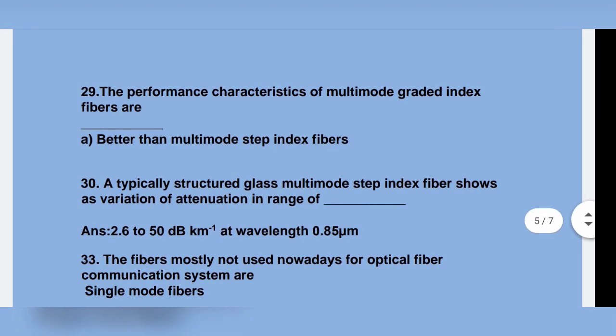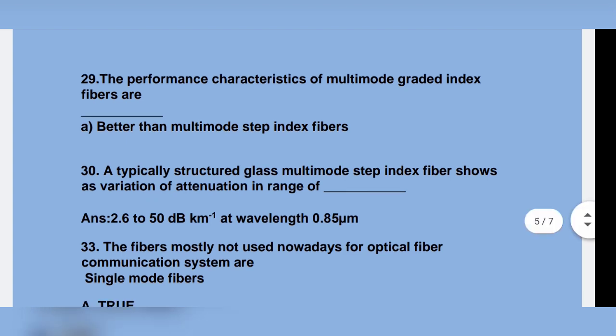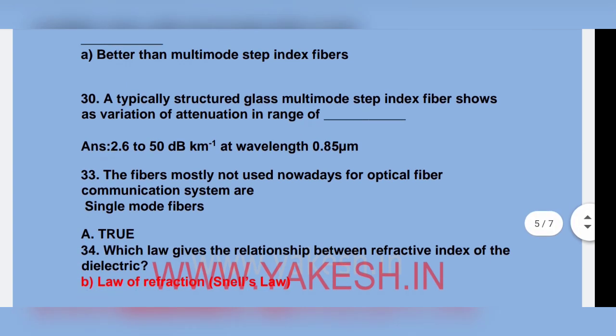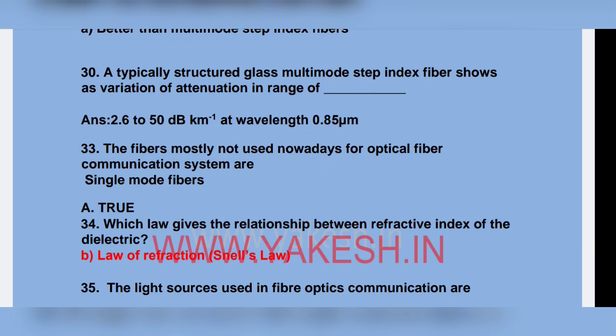The performance characteristics of multi-mode graded index fiber are better than multi-mode step index fiber. A typical structured glass multi-mode step index fiber shows a variation of attenuation in the range of 2.6 to 50 dB at wavelength 0.85 nm.